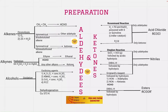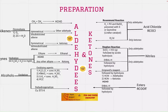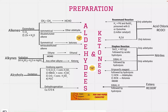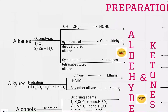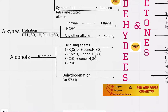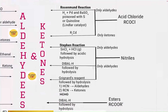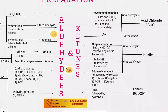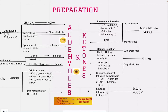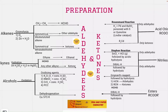As you can see in the flowchart, we've got the preparation listed in six different ways: preparation of aldehydes and ketones from alkenes, alkynes, alcohols, followed by preparation from acid chlorides, nitriles, and esters. For those who are new to the channel, there are already flowcharts on alkenes, alkynes, alcohols, halogen derivatives, and ethers on the channel.